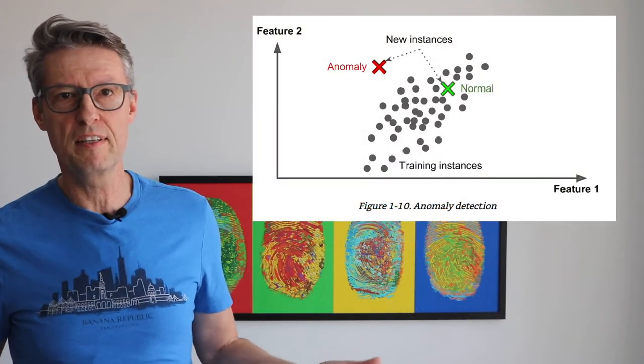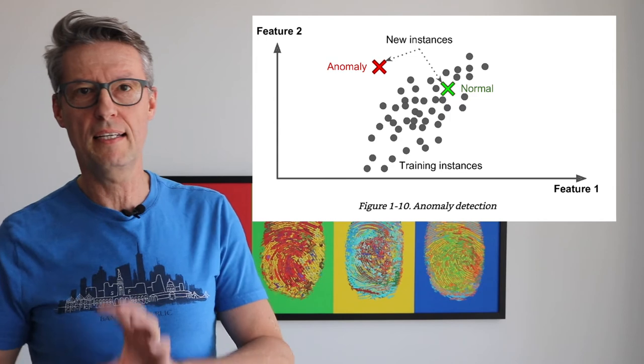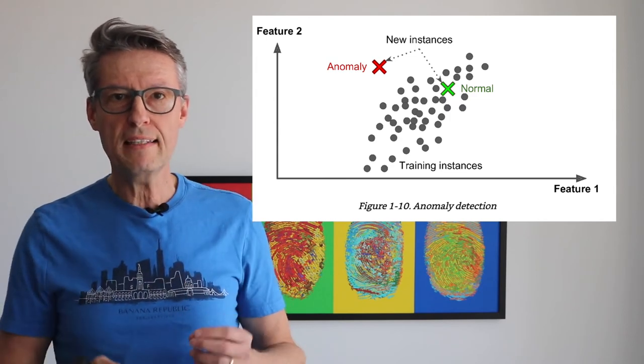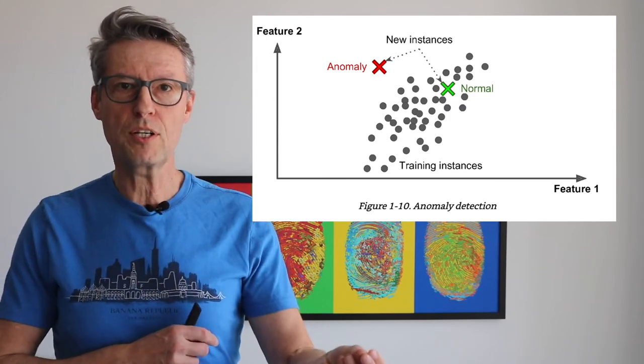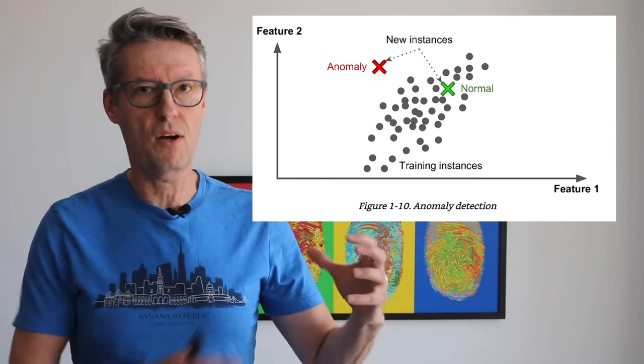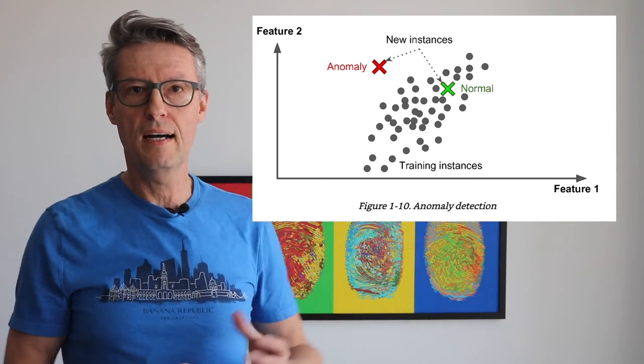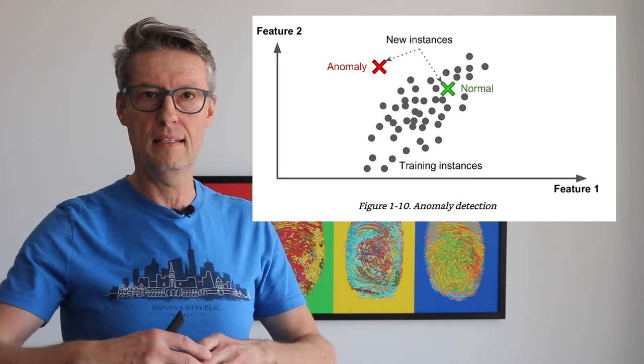The second technique is anomaly detection. If you have normal transactions in a credit card, for example, but some of these transactions are completely different, you can use anomaly detection to find which new transaction is anomalous — because it's not quite the same as the majority of your data — or determine that it's normal and not a problem, and go forward with the transaction.